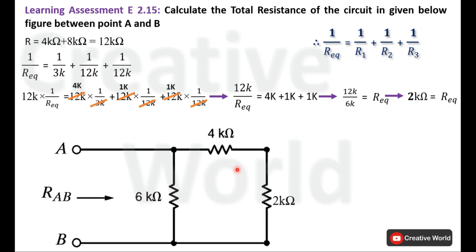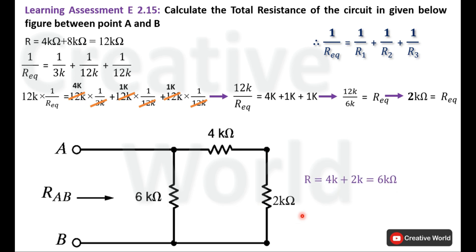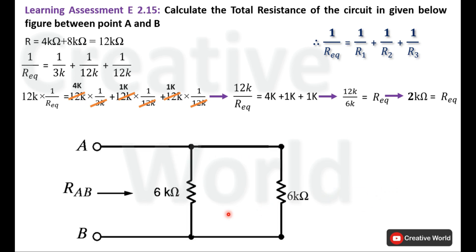Now if we observe, the 2k and 4k ohm resistances are connected in series. We can merge these two into a single resistance with a value of 6k ohm, the sum of the two individual resistances. We modify the circuit accordingly.